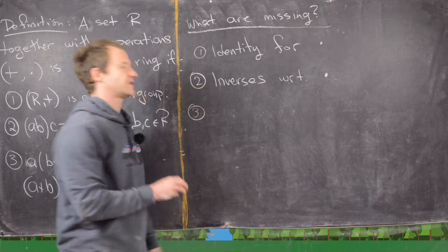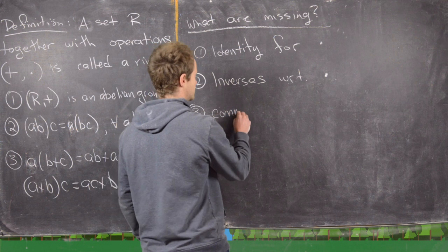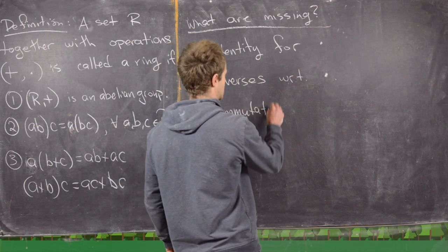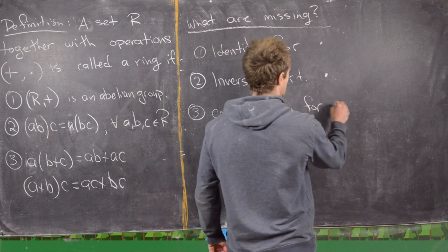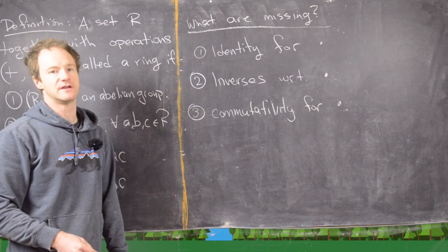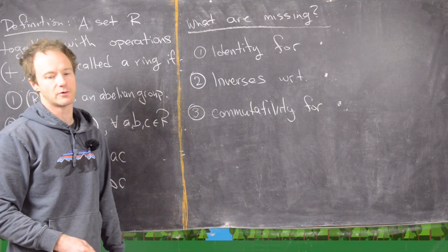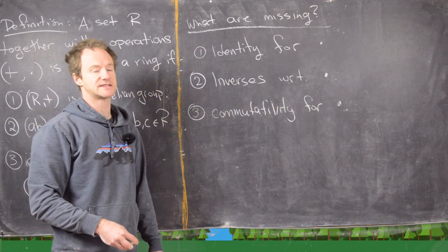And then maybe one other thing that we would like to have would be commutativity for the multiplication operation. So in order to be a ring we do not need commutativity for the multiplication operation, but we will often have it. I'll clean up the board and then we will look at some examples.